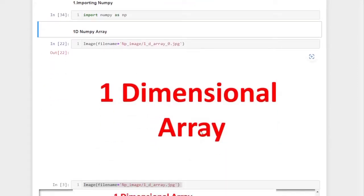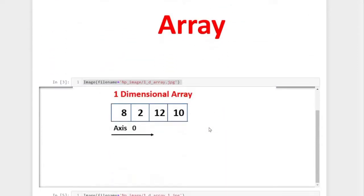First of all, we will discuss a one-dimensional array. A one-dimensional array is very similar to a list in Python. That means the numbers or elements are arranged in a single dimension or in a single axis. Here is a pictorial representation of a NumPy array having four elements.